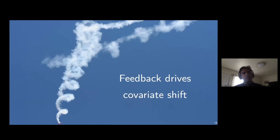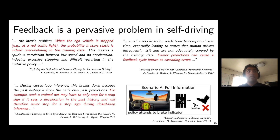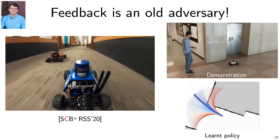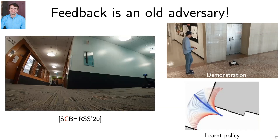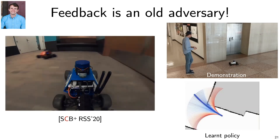Feedback breaks the IID assumption in machine learning — the distribution of inputs depends on the very policy we're learning. This problem is very common in self-driving, reported by us and competitors alike. Back in my postdoc at UW in 2018, we built a fleet called Musher programmed via imitation learning. When we rolled the learner out, it would drive well and then crash into a wall: once the robot makes a mistake, it enters a state it hasn't seen before and keeps making mistakes.